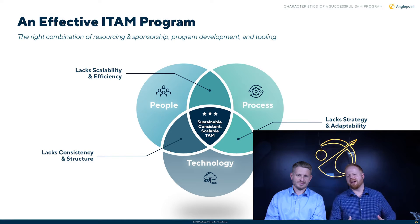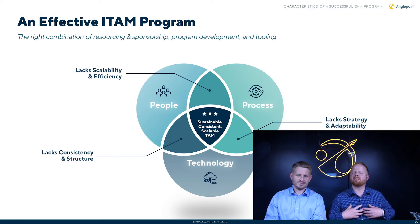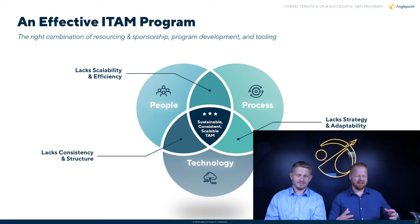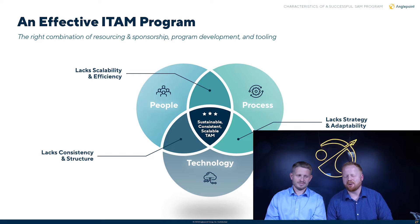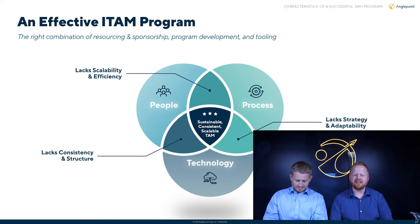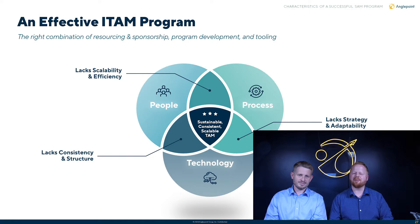We need to make sure that we have the right people in place, that they know what they're going to do, that they have the proper executive sponsorship, and that we've aligned the proper organizational structure to get things done. We also need to have process in place — we need to make sure that we have policies, we have governance, that we're aligned with whatever our business processes may be, and that our SAM function falls in line with that.